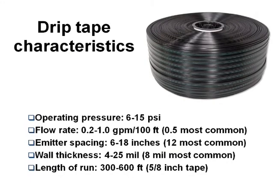The drip tape operating pressure is 6 to 15 PSI. The most common flow rate is about a half-gallon per emitter per hour — drip, drip, drip — that's what makes it wonderful to use. Emitter spacing is anywhere from 6 to 18 inches; 12 inches is the most common and what we use. A mil is one-thousandth of an inch — it's pretty thin stuff, but it's strong. Keep the pressure at 10 to 15 pounds. If you put 100 pounds in it, it'll blow. For length of run, keep it up to 300 feet and you'll be fine.